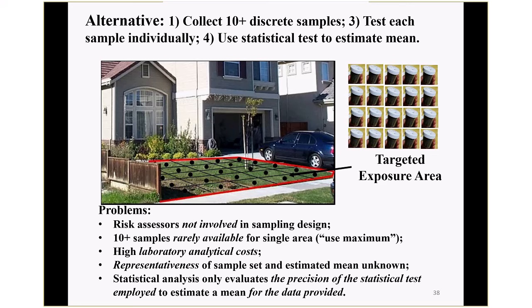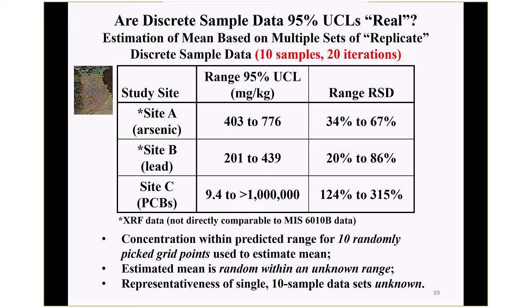Something we looked at in our field study: are discrete sample data and the 95% UCLs real and reliable? We estimated means based on multiple sets of replicate discrete sample data — picking random numbers at each grid point and calculating 95% UCLs 20 times. At site A, 10 different people might get a range of 95% UCL from 403 ppm to 776 ppm — almost twofold. At site B for lead, the range of 95% UCLs across 20 iterations was 200 ppm to 439 ppm — again about twofold. For PCBs, the 95% UCLs ranged from 9.4 ppm to over a million ppm. Any risk assessor seeing this would just throw up their arms and say, what can I do with this data?